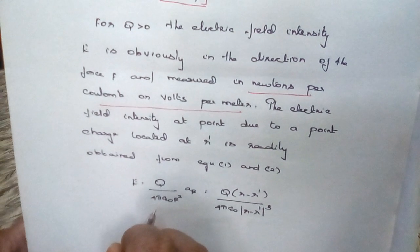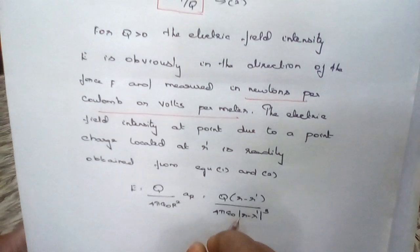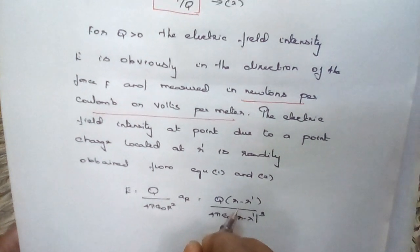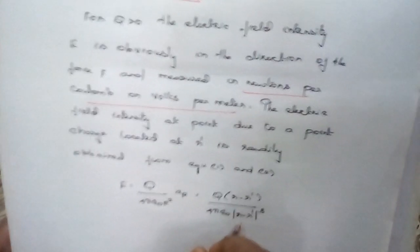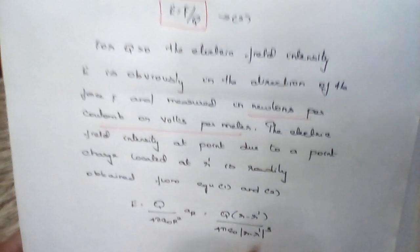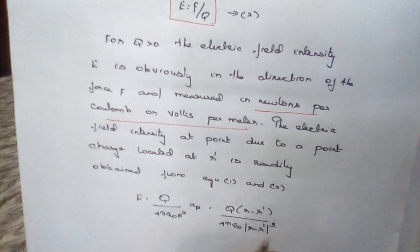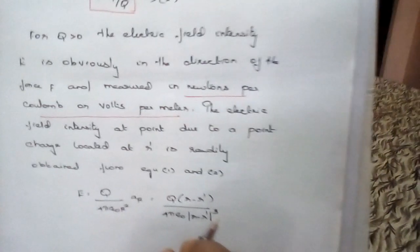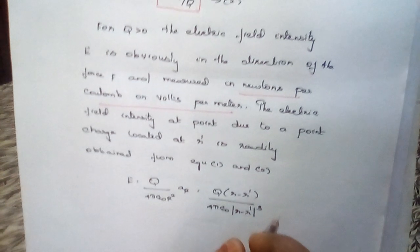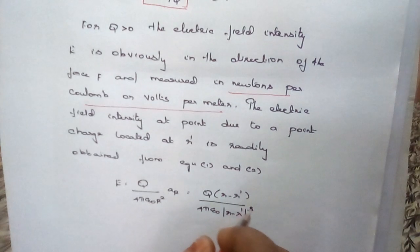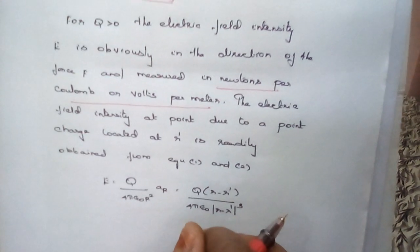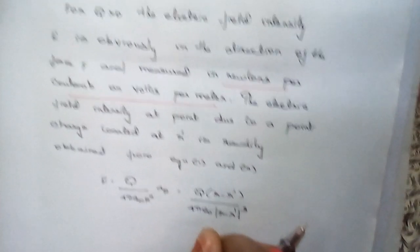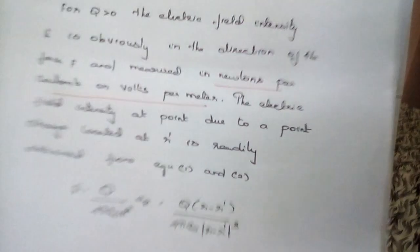The electric field intensity is equal to q divided by 4π epsilon-naught, times (r minus r') divided by the modulus of (r minus r') cubed. This expression is similar to that of Coulomb's law — the Coulomb's law extension gives the electric field intensity. So far we have discussed the electric field intensity due to a point charge.